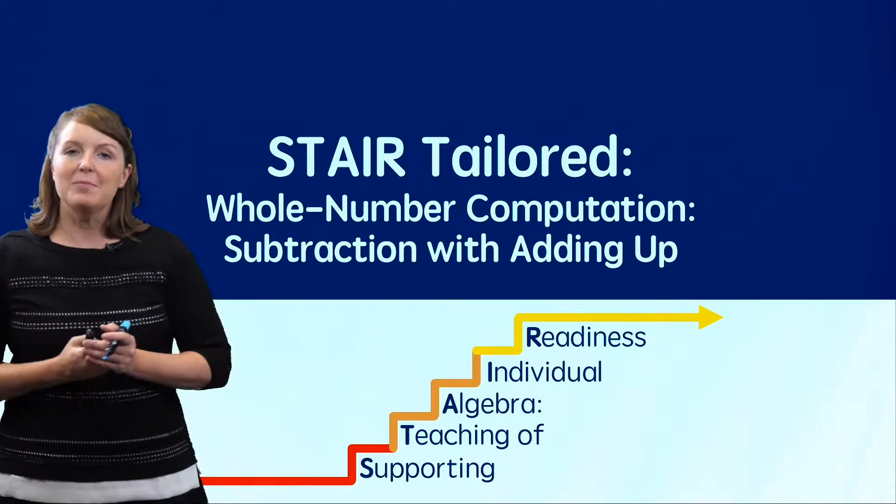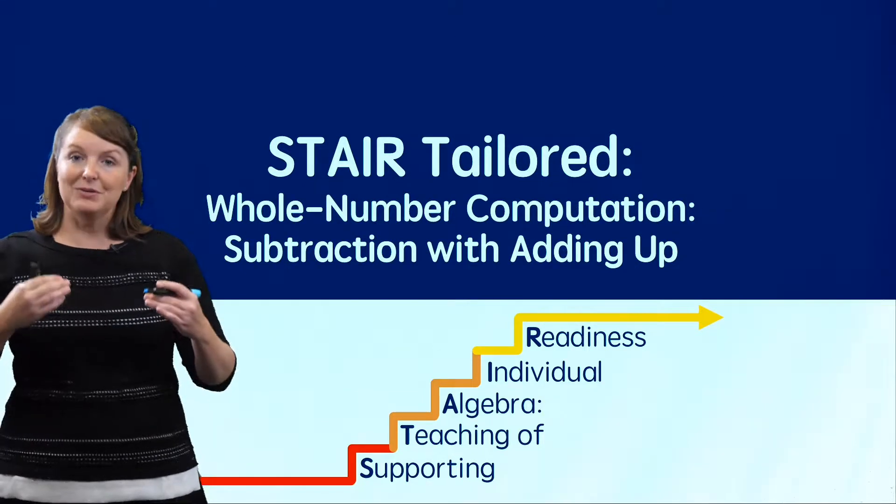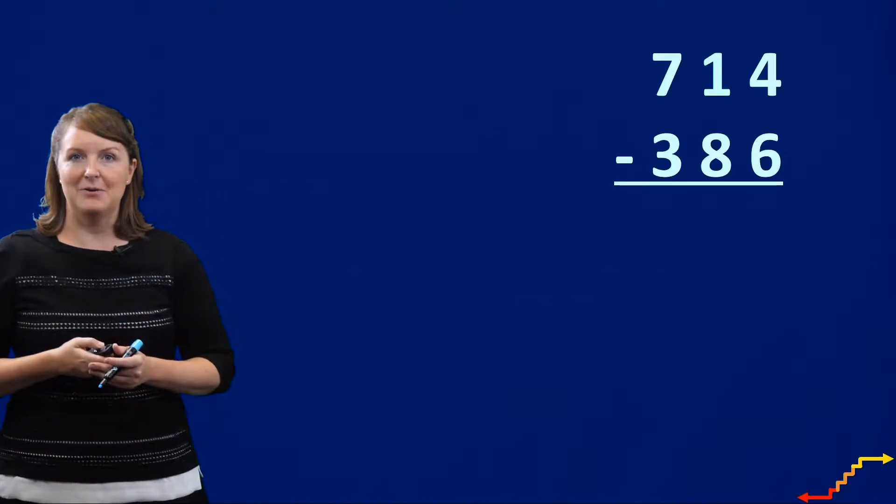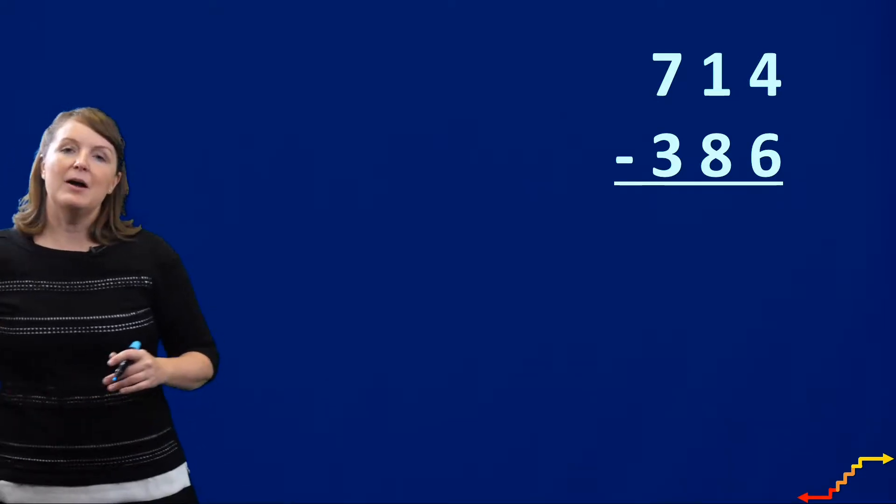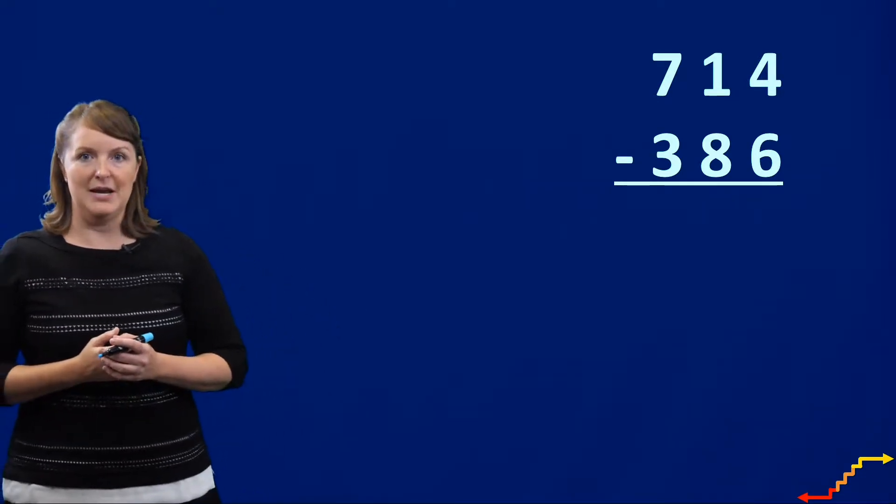We're focused right now on whole number computation, and we're going to think about how to do subtraction using an adding up model. So here is our problem. We're going to think about subtracting 714 minus 386.